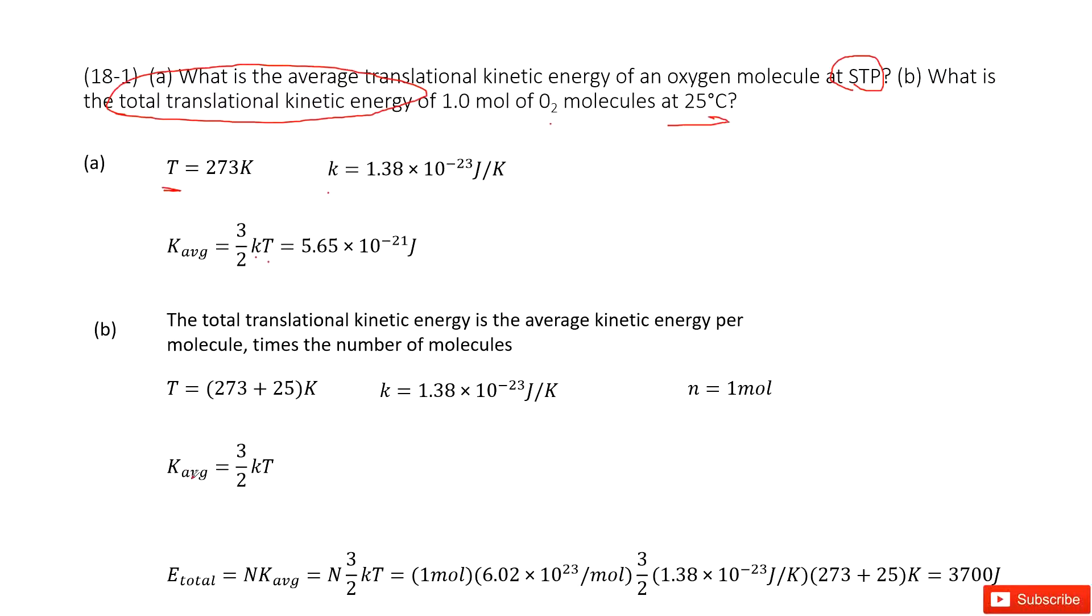As we know, the average kinetic energy is 3 over 2 kT. Now, what's the number of molecules for one mole of oxygen? We can use Avogadro's constant times the mole number.